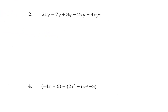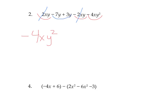On number 2, we have more variables, so we're just looking through for like terms. Let's start with the term that has a square on it — since it's the only one with xy², there are no like terms, so we write that term first. Then 2xy and negative 2xy are like terms, but positive 2 and negative 2 cancel each other, so those disappear. Then negative 7y and 3y are like terms: negative 7 plus 3 makes negative 4y.